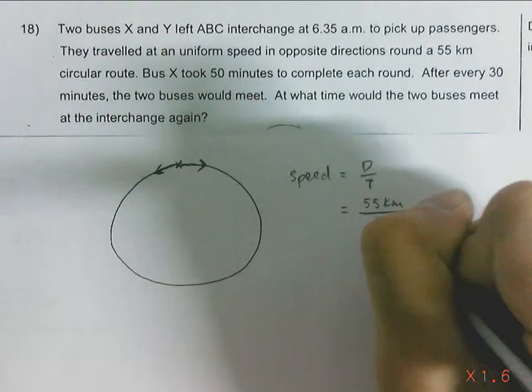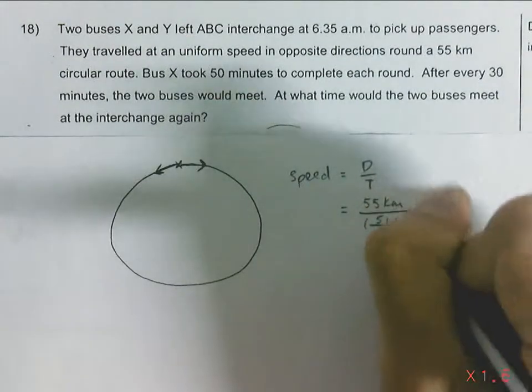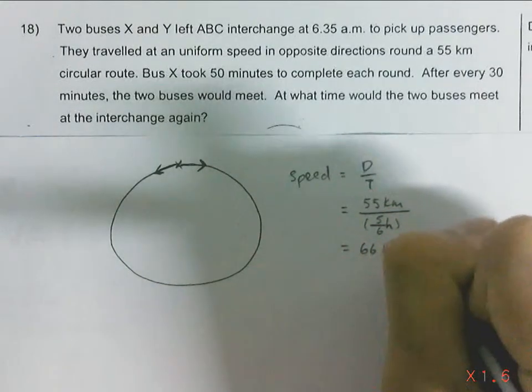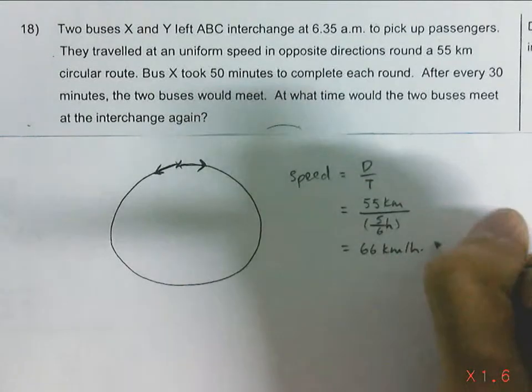So 5 out of 6 of an hour, which gives the speed to be 66km per hour. Then this is speed of Bus X.